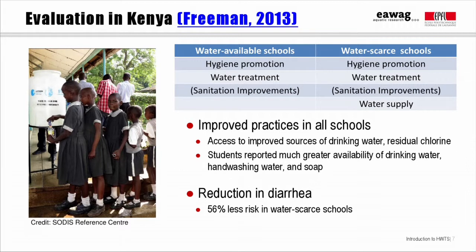At a follow-up visit six months after the intervention, all of the schools including the control schools had better access to improved sources of drinking water. About two-thirds of water samples included residual chlorine, indicating that water treatment was ongoing. Students reported much greater availability of drinking water, hand washing water, and soap, which was also confirmed by the evaluation teams. There was also a significant reduction in diarrheal disease by more than 50%, but this was found only in the water scarce schools which received a new water source. So at least in this one case, we have evidence of improved knowledge and behavior, at least after six months, which may not alone be sufficient to reduce diarrheal disease burden.